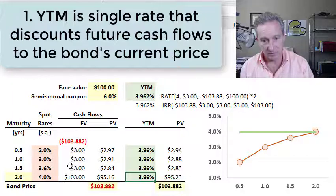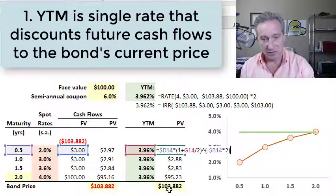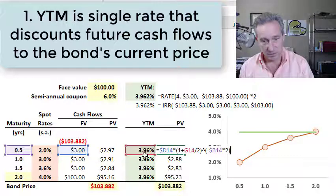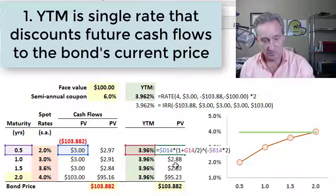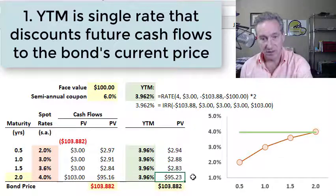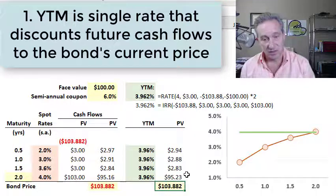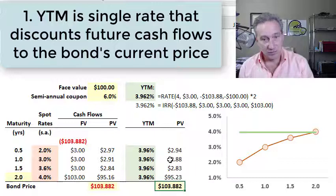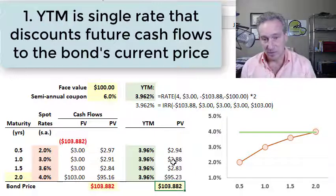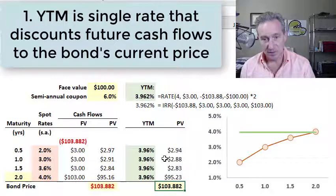if I discount them at the yield to maturity instead of at the spot rates, you'll notice I get the same price.